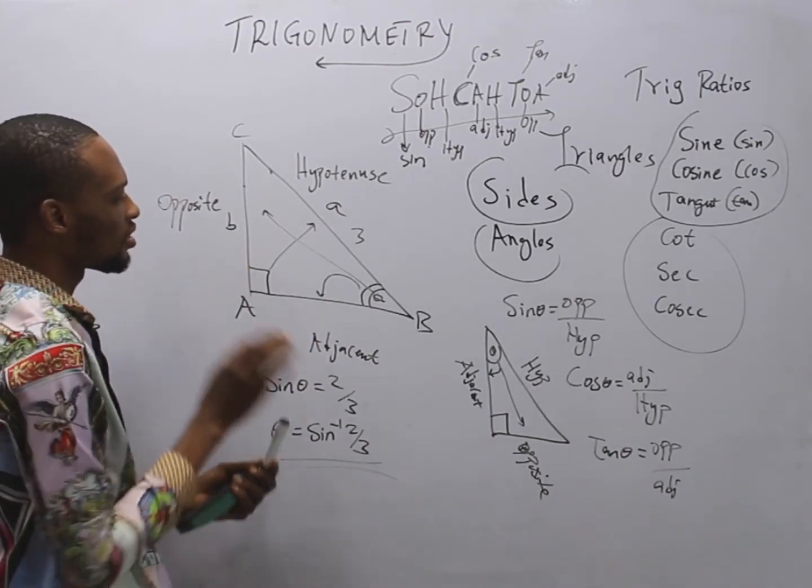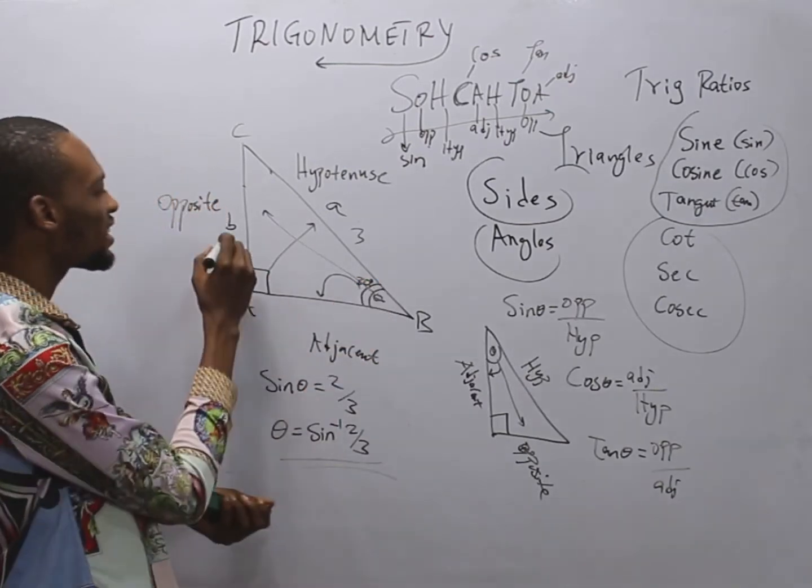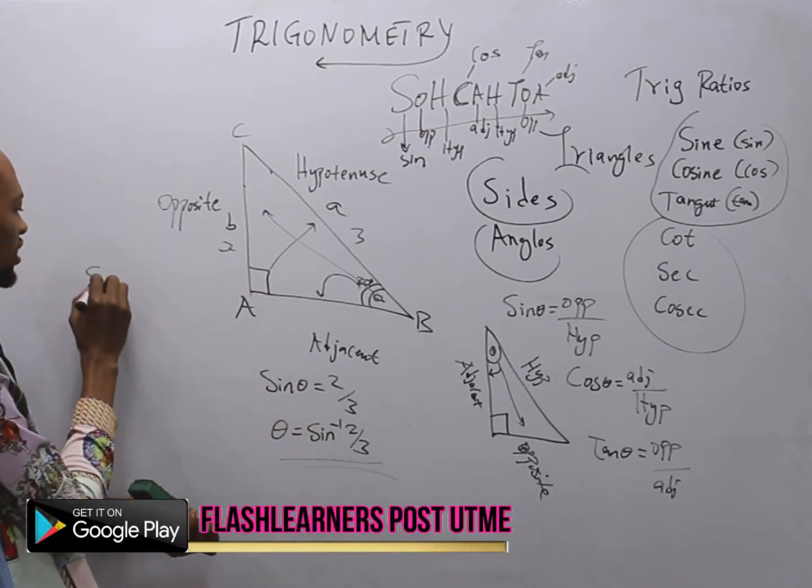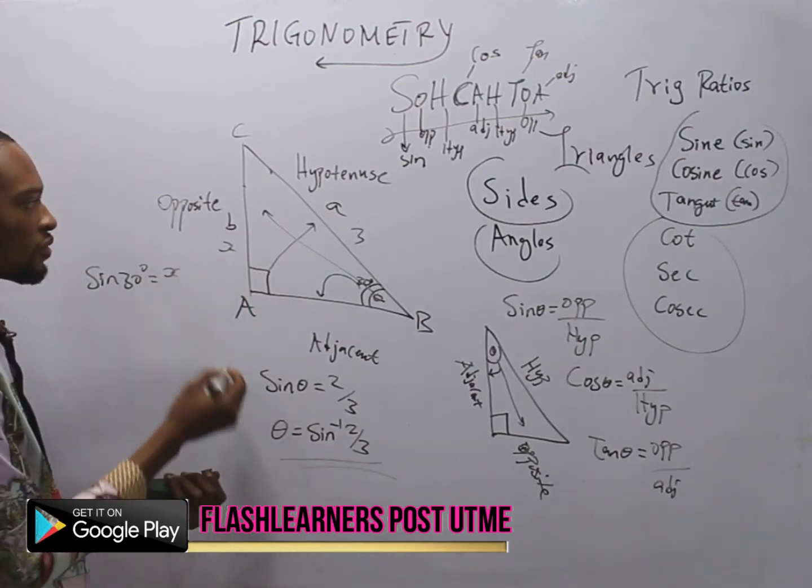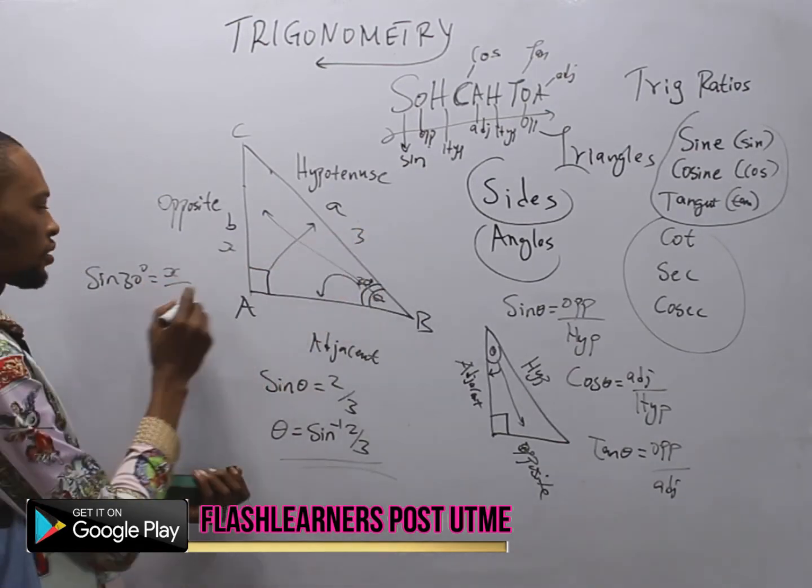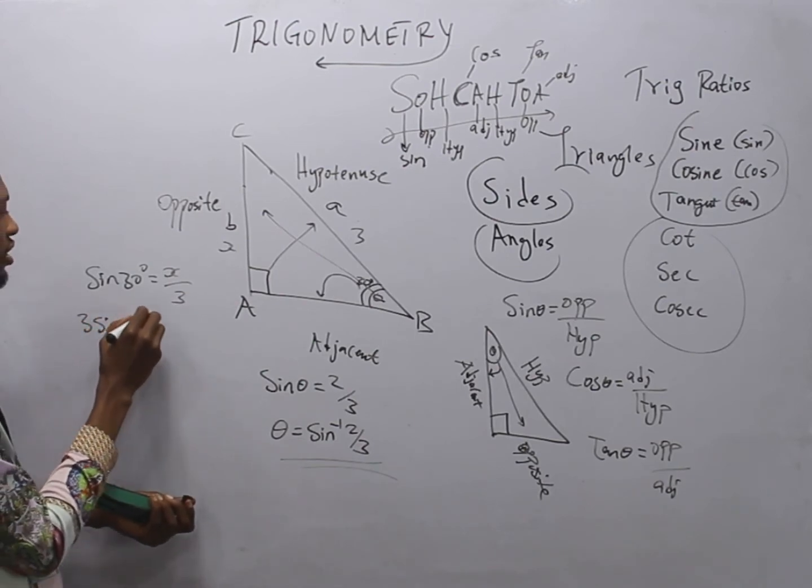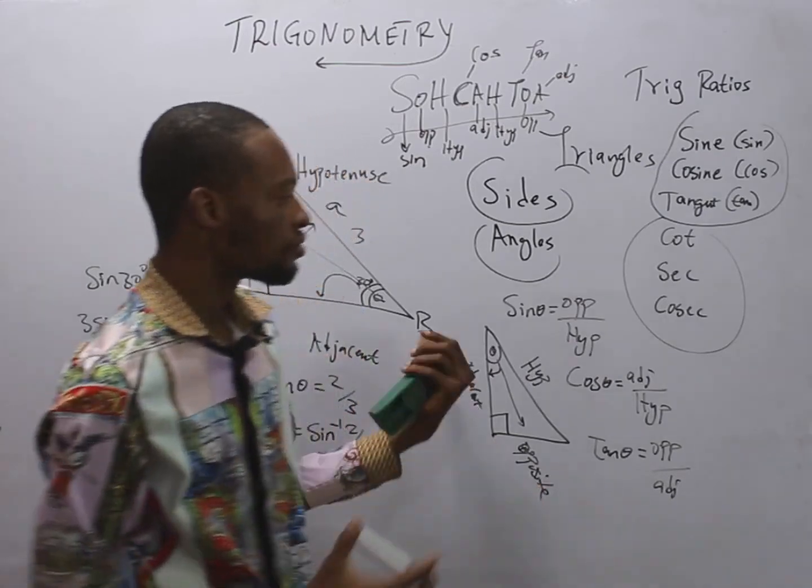If this we are missing and we are given the angle, let's say here is 30 degrees. To find this side S, which is opposite, you simply say sine 30 degrees is equals opposite, which is S we are looking for, over hypotenuse, 3. So 3 sine 30 degrees is equals S. So this is how you solve using trig ratios.